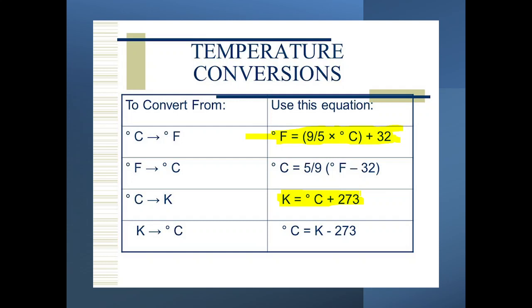We can convert Fahrenheit to Celsius by rearranging the formula. If F is the input, we solve for C by subtracting 32 and then multiplying by 5 and dividing by 9. Simple mathematics — you rearrange the formula and when you have the answer, you can verify it.